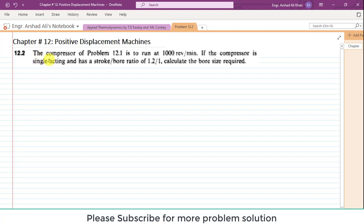The statement of problem 12.2 is: the compressor of problem 12.1 is to run at 1000 revolutions per minute. If the compressor is single acting and has a stroke to bore ratio of 1.2 by 1, calculate the bore size required.